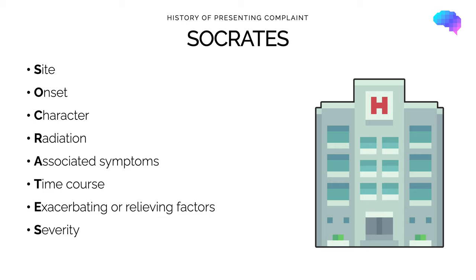We then ask about the symptom's onset — for example, whether breathlessness came on suddenly or more gradually. It's then important to establish the characteristics of the symptom: for breathlessness, is it constant or does it come and go? Radiation involves asking if the symptom moves anywhere else, most commonly applied to pain — for example, does chest pain spread to any other part of the body?